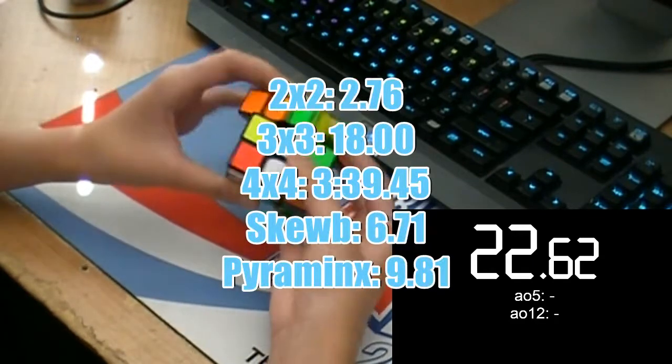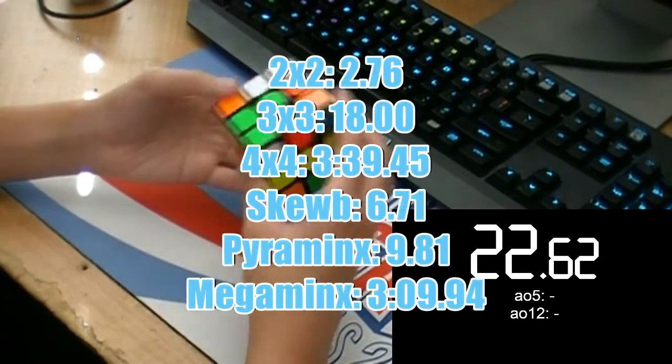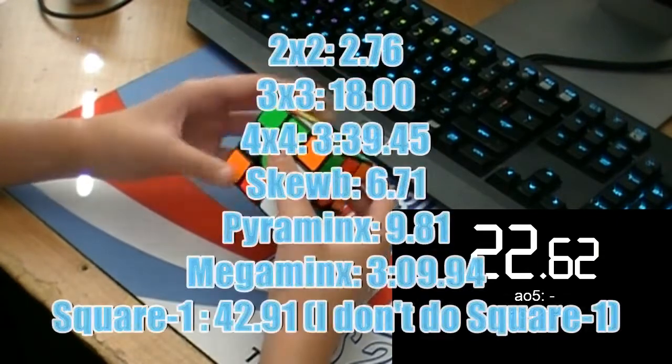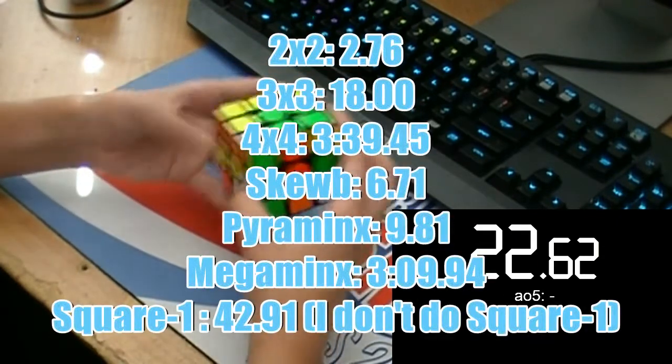For Pyraminx, I got a 9.81. For Megaminx, I got 3 minutes, 9 seconds, and .94 seconds. And for Square One, I got a 42.91.